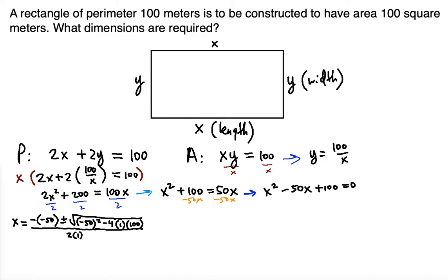So what that gives us is x is equal to 50 plus minus, now this is going to be 2,500 minus 400 over 2.